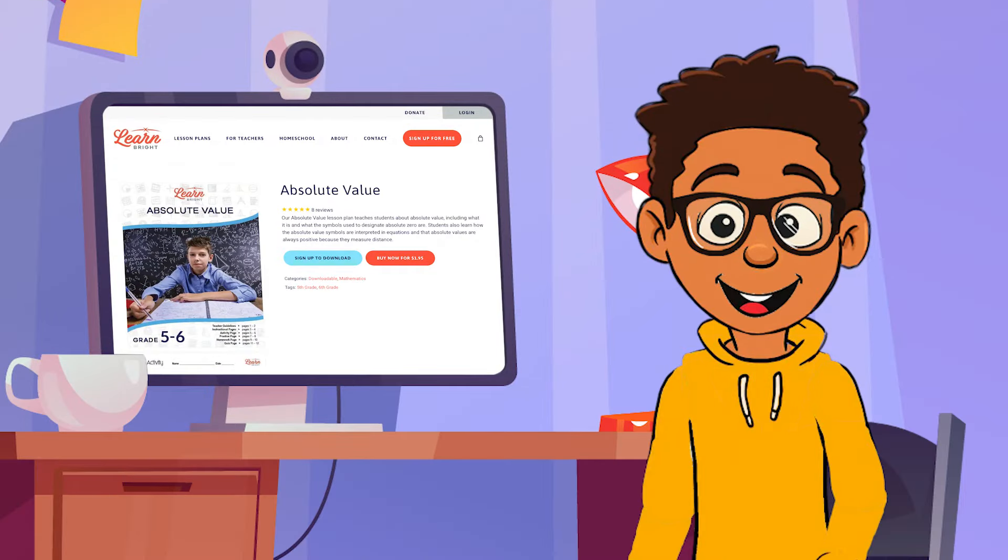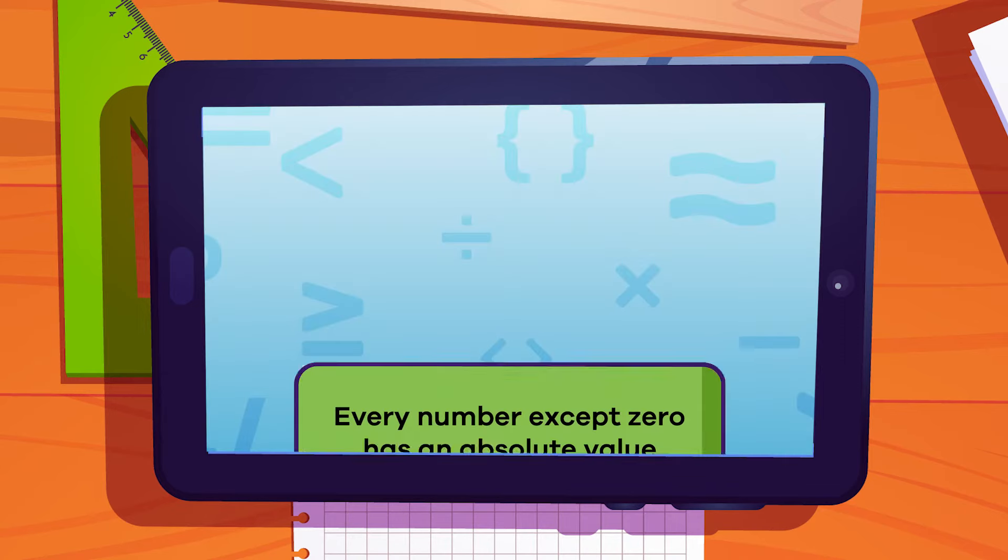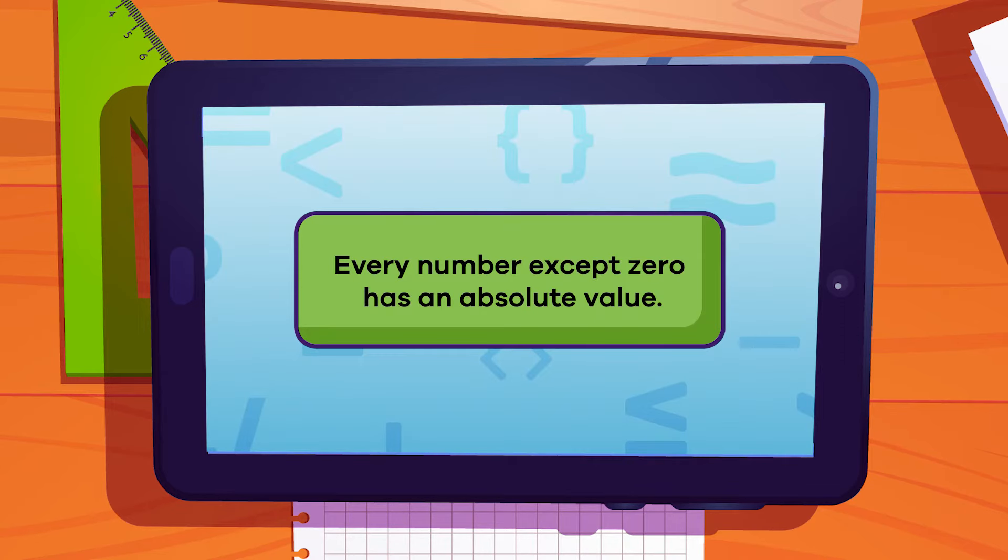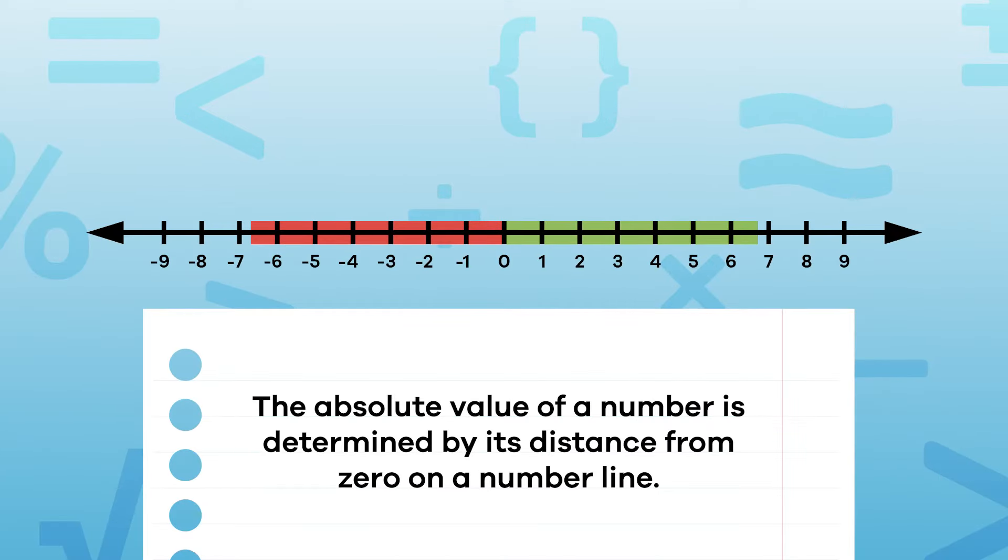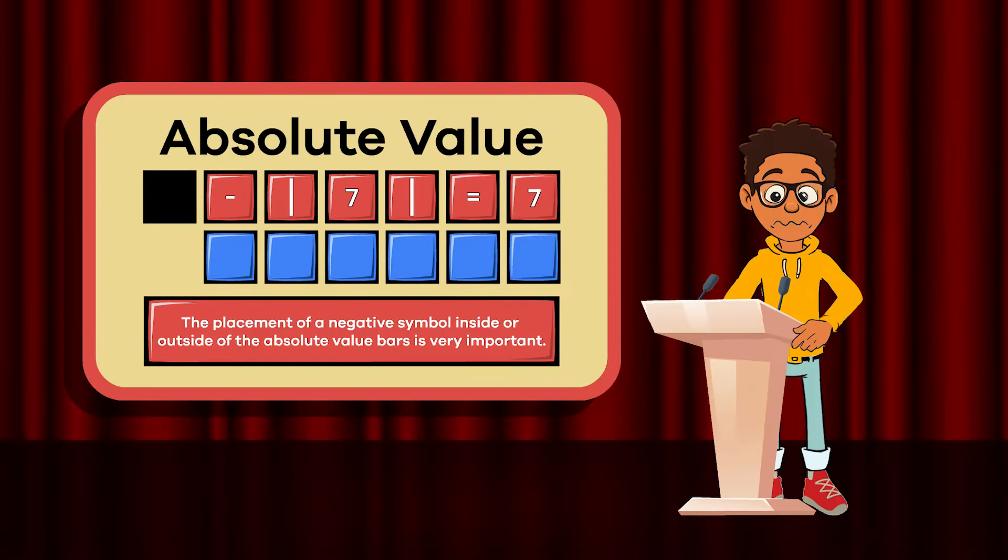Here are three things to remember about absolute value. First, every number except zero has an absolute value. Second, the absolute value of a number is determined by its distance from zero on a number line. Last, the placement of a negative symbol inside or outside of the absolute value bars is very important.